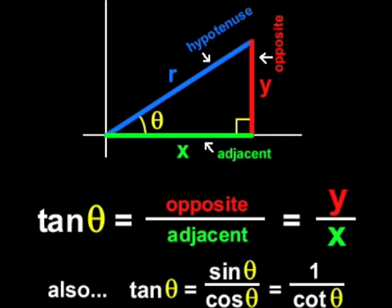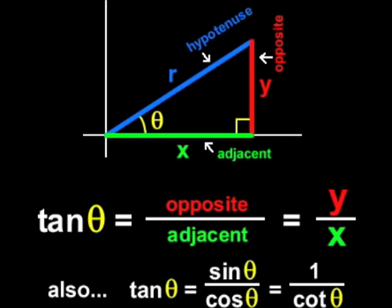The mnemonic SOHCAHTOA is something every trig student in high school learns. The sine of theta equals the opposite side divided by the hypotenuse, SOH. Then the cosine of theta equals the adjacent side divided by the hypotenuse, CAH. And then TOA means the tangent of theta equals the opposite side divided by the adjacent.